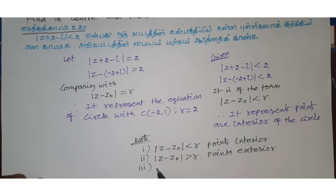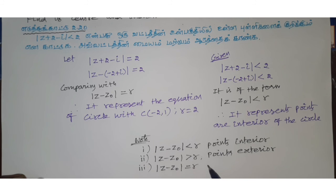When modulus z minus z naught equals r, points are on the circle.